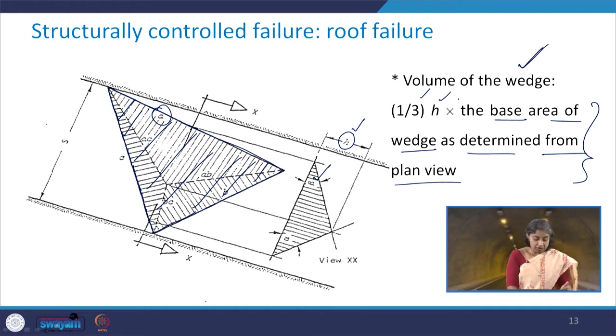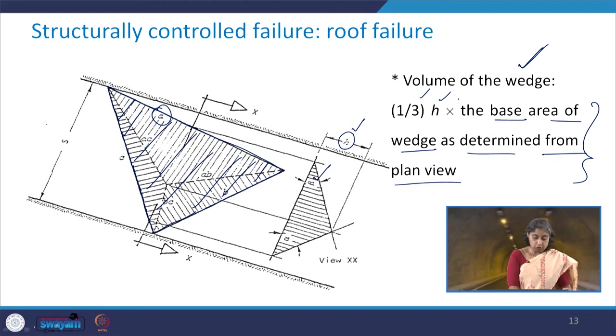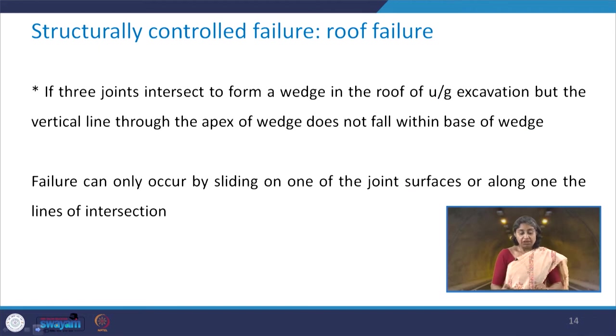Once alpha and beta are known, from the point corresponding to plane C draw a line at angle alpha, and from the point corresponding to plane A draw a line at angle beta. Wherever these two lines intersect gives the height h of the wedge. The volume of the wedge is then one-third of the height multiplied by the base area determined from the plan view.